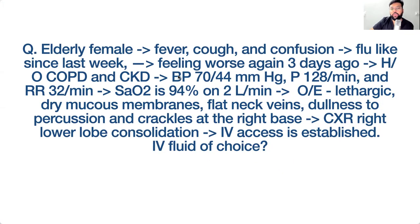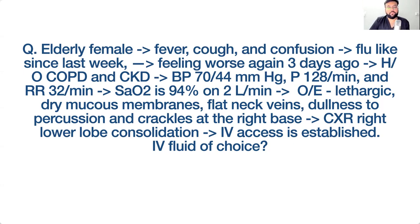An elderly female presents with fever, cough, confusion, and flu-like symptoms for one week, now worsening for three days. She has a history of COPD and CKD. BP is 70/40, pulse high, respiratory rate high, saturation 94% on 2 L/min oxygen. She is lethargic with dry mucous membranes, flat neck veins, dullness to percussion, and crackles at the right lung base. Chest X-ray shows right lower lobe consolidation. Diagnosis: sepsis.